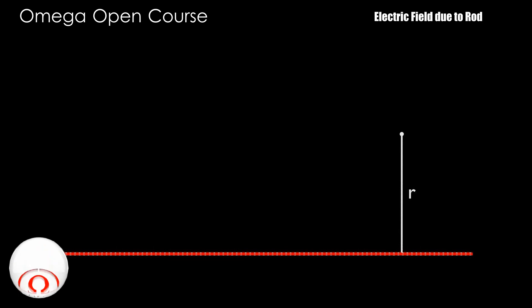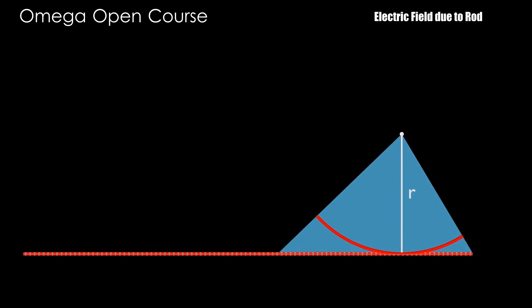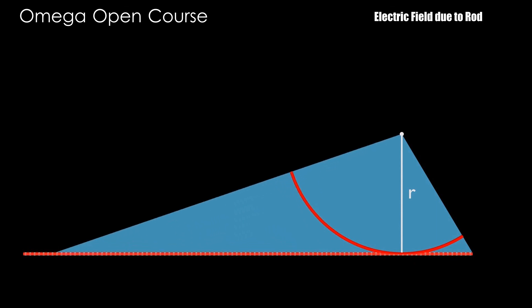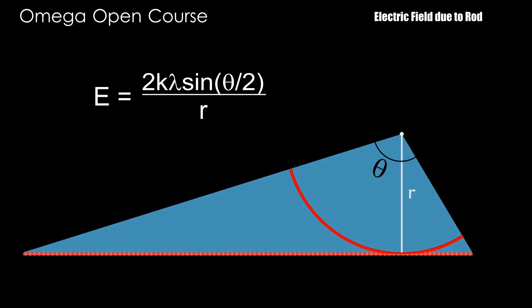Thus to summarize: to find the electric field due to a rod at any point, replace the rod with an arc of the same linear charge density whose center is at the point and whose radius equals the perpendicular distance of that point, such that the arc subtends the same angle at the point as the rod. If the arc subtends an angle theta at the center, the electric field is 2·K·lambda·sin(theta/2) divided by R, and its direction is along the bisector of the arc.